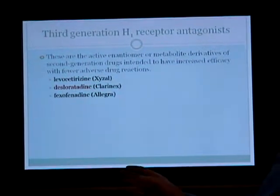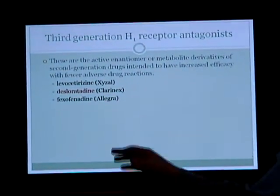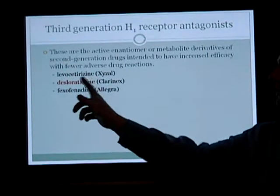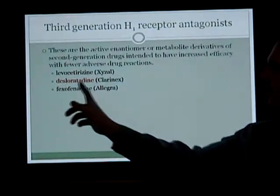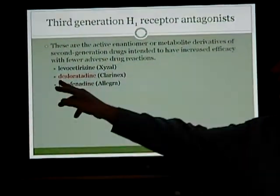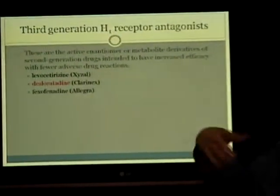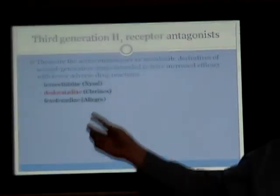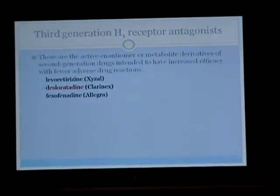Third-generation H1 receptor antagonists include drugs like levocetirizine, desloratadine, and fexofenadine. Desloratadine is an isomer — a prior isomer of Claritin — so it is called Clarinex.